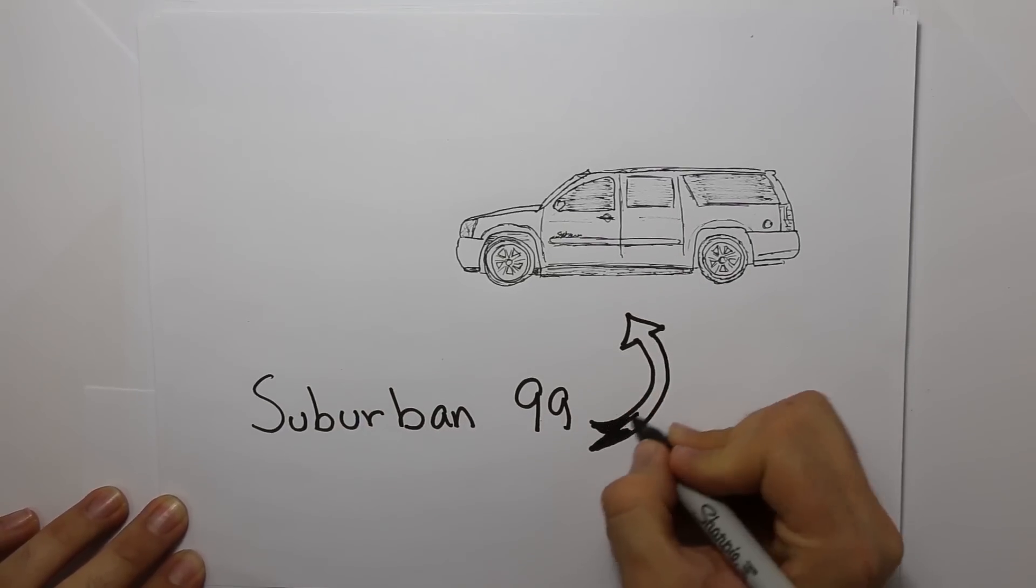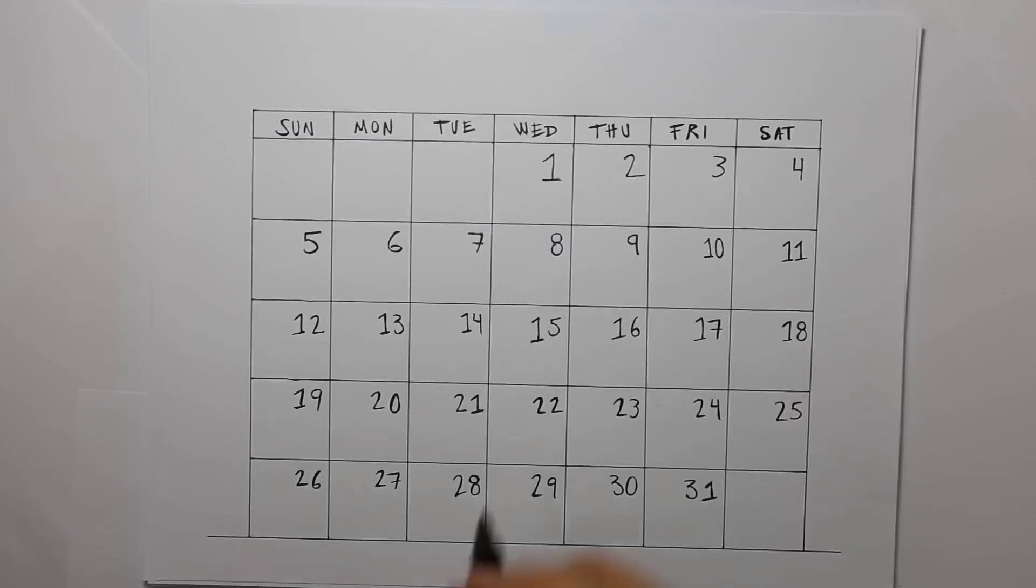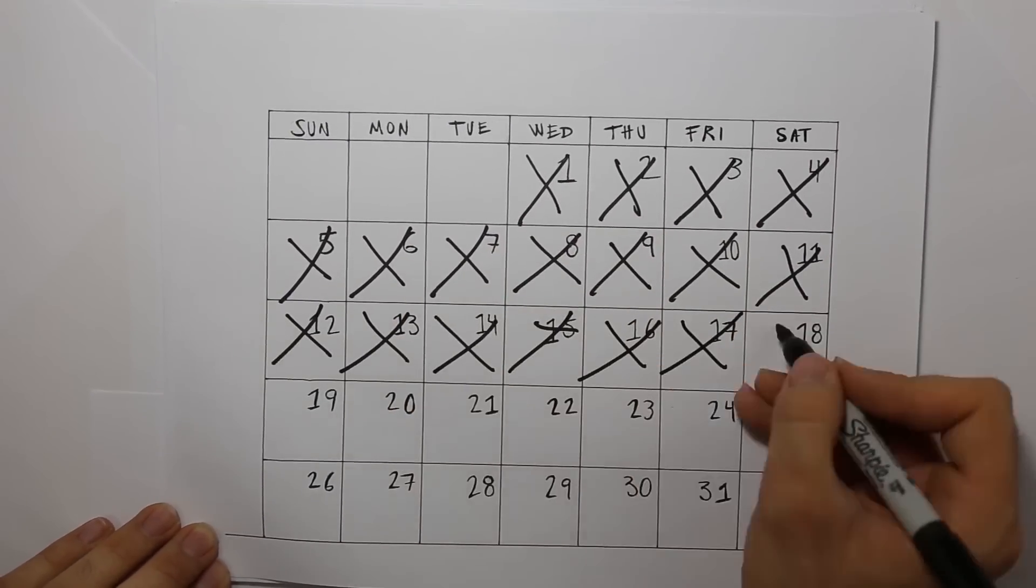We'll be traveling in an old Suburban, so old you have to literally roll the windows up and down. That means five people stuck together in a tiny space for a whole month.